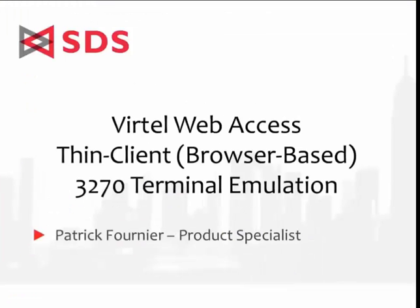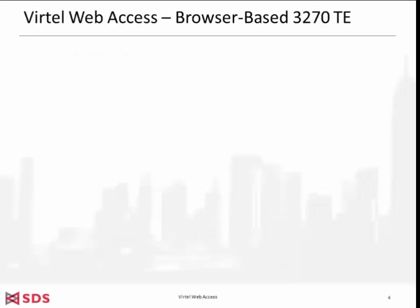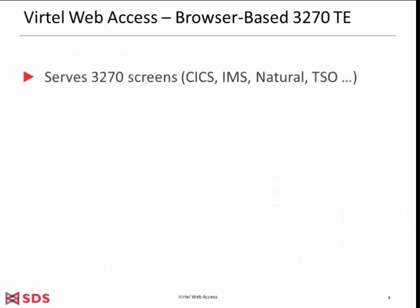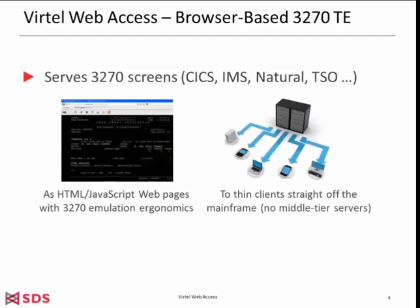Bertel Web Access serves 3270 screens — such as those of CICS, IMS, Natural, and TSO applications — as HTML JavaScript web pages with 3270 emulation ergonomics, to thin clients, straight off the mainframe, without middle-tier servers.